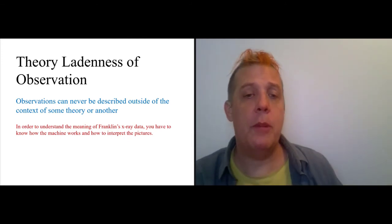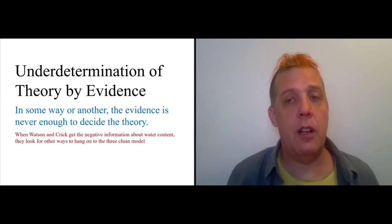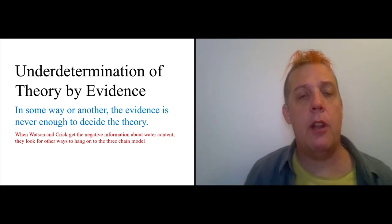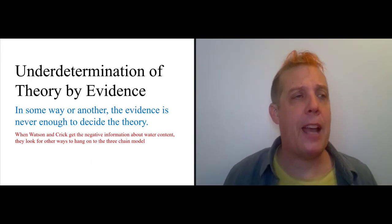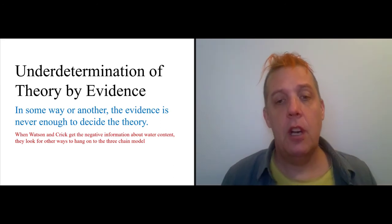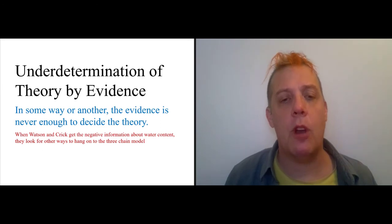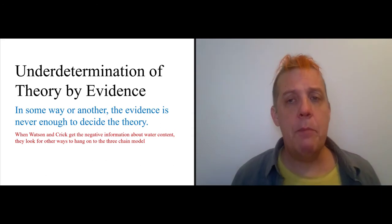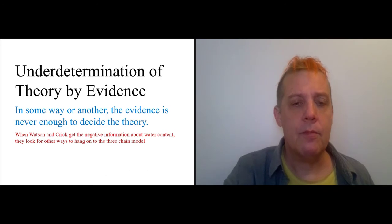The other thing is the underdetermination of theory by evidence. Basically, this is just that you never have enough evidence. In one way or another, evidence is never enough to decide the theory. You can always go back and try and revise the theory more to make it fit the evidence. But at some point, that just seems like it's not a feasible project anymore, and you have to use a judgment call, which may not seem as rigorous as people think of science as being.